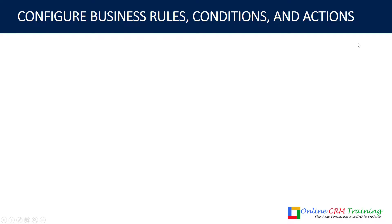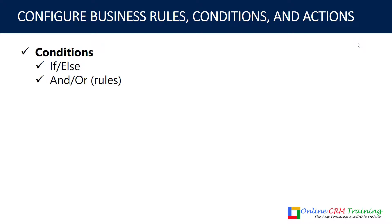Welcome to this tutorial. You will learn how to configure business rules along with conditions and actions. The first condition type is if/else — perform a particular action if the condition is met, else perform a second action. Under rules you have AND/OR options to define when a rule should execute, and you can filter using those options.